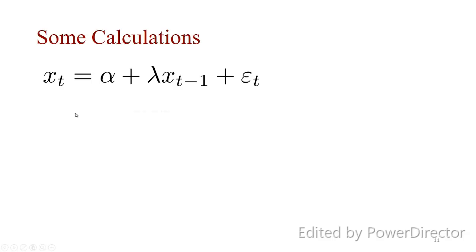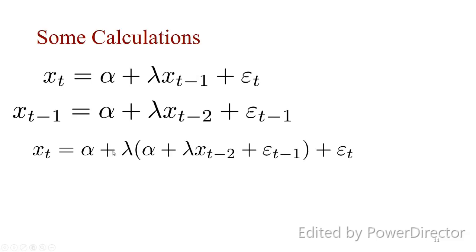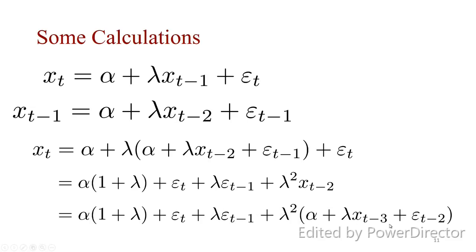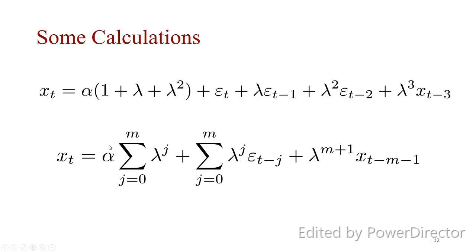We know that x_t = alpha + lambda * x_{t-1} + epsilon_t. We can replace x_{t-1} with its own lagged expression, giving alpha + lambda*(alpha + lambda*x_{t-2}) + epsilon_t, which rearranges to alpha*(1 + lambda) plus further terms. Continuing this recursive substitution, we replace x_{t-2} by alpha + lambda*x_{t-3} + epsilon_{t-2}. This reveals a recursive relationship between x_t and x_{t-1}, producing a sequential summation form.